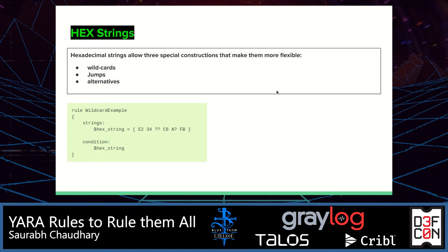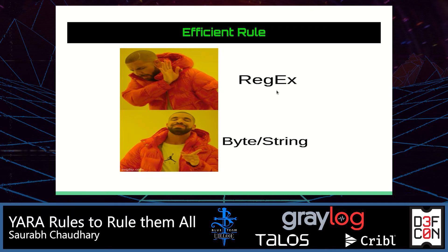Hexadecimal strings allow three special constructions that make them more flexible — this is the fun part. Using hex characters 0-9 and A-F, they allow us to use wildcards, jumps, and alternatives in the rule to accommodate more logic. We will try to focus our rule writing more on hexadecimal strings than normal ASCII strings. Regex is not recommended for rule writing because it comes with a lot of false positives — try to avoid it.